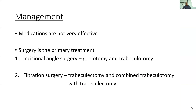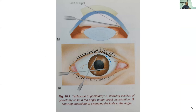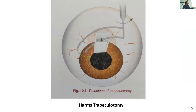In congenital glaucoma, there is an angle anomaly that must be corrected, so surgery is done. Either we can do incisional angle surgery — goniotomy or trabeculotomy — or we do filtration surgery. In goniotomy, with a knife we slide along the angle trying to remove any membranes. In trabeculotomy, we put the instrument in the trabecular meshwork and try to bring it into the anterior chamber by breaking the trabecular meshwork.